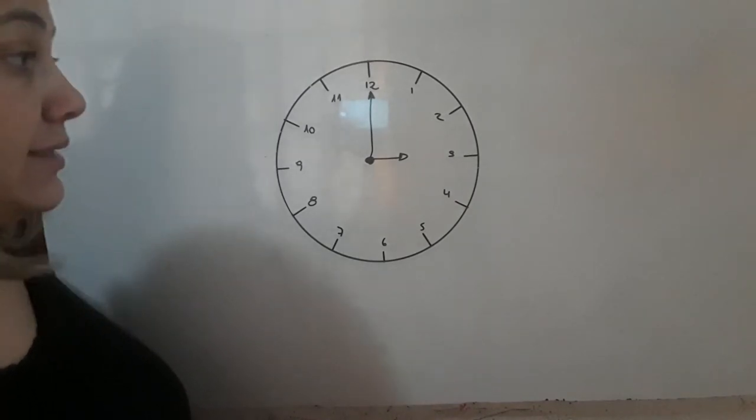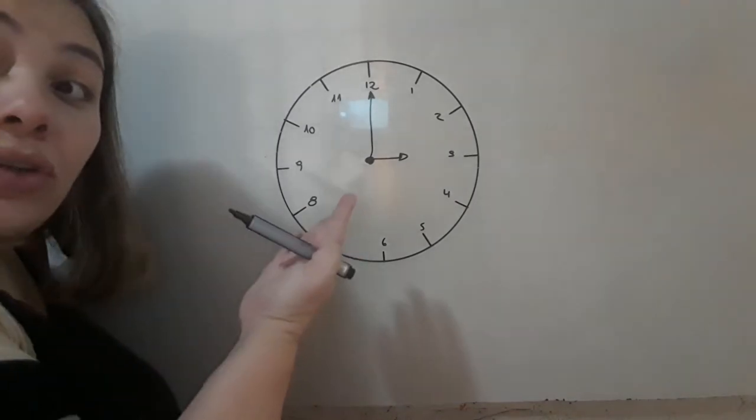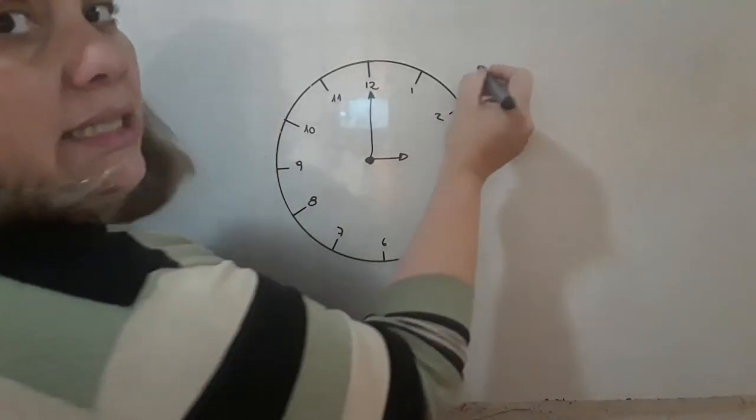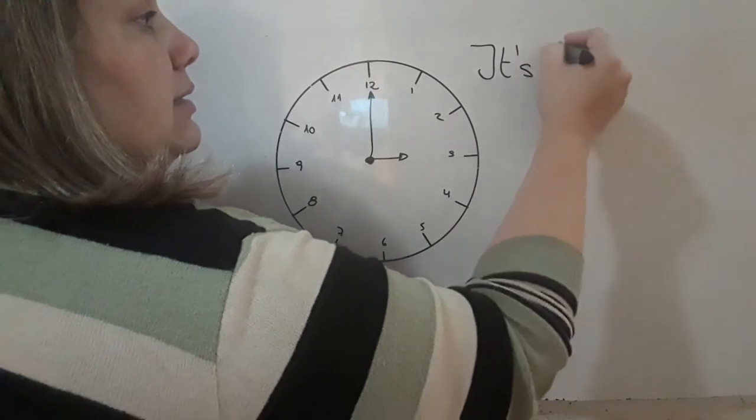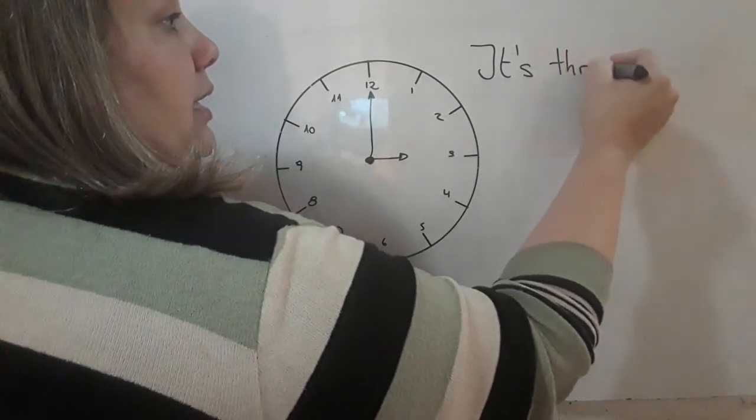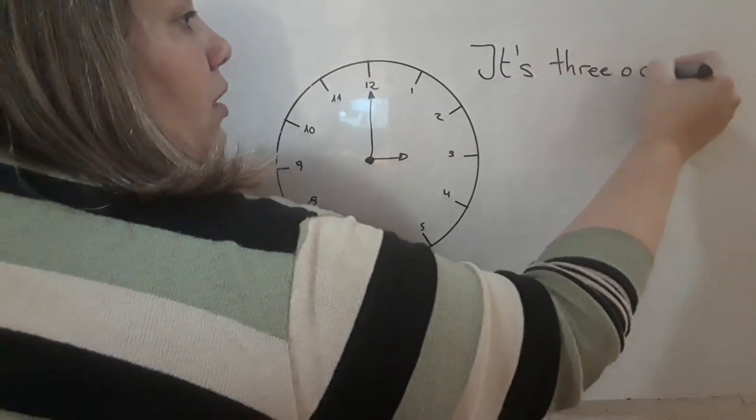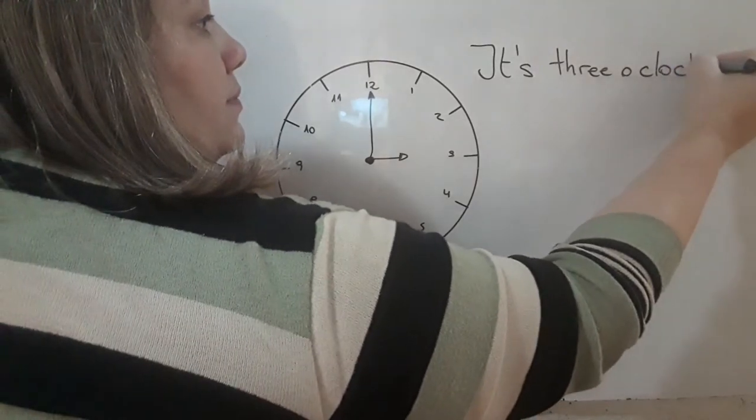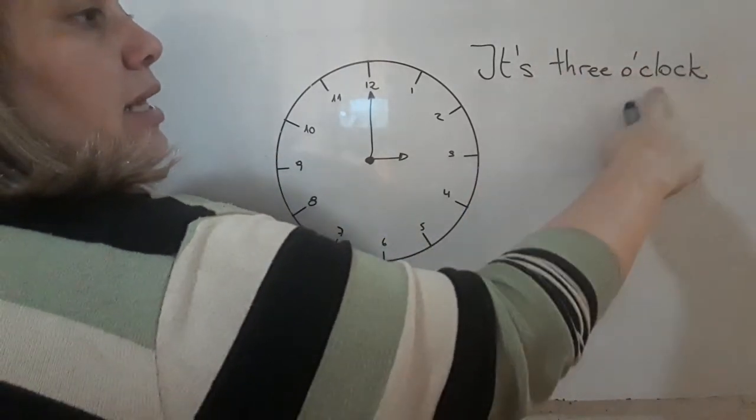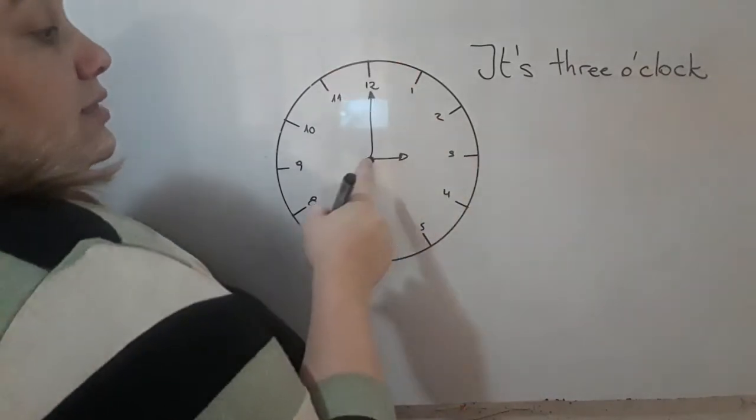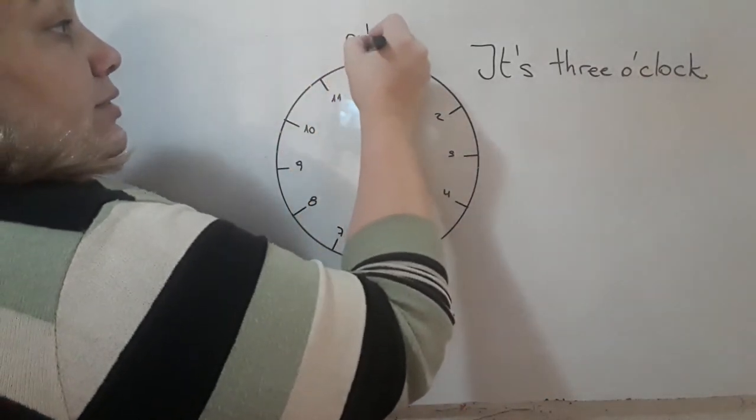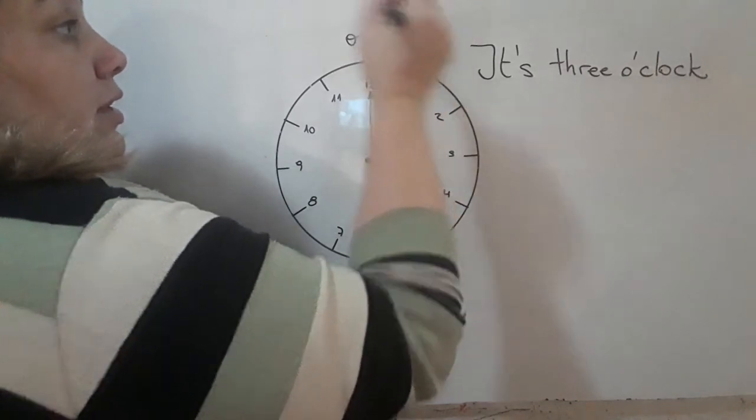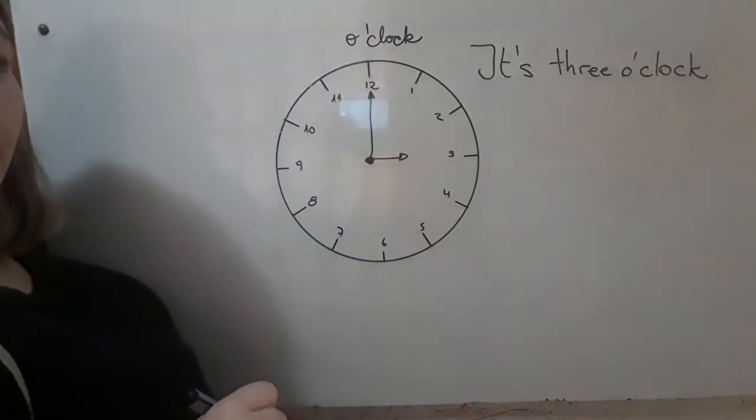Vamos con la misma hora que antes. Ahora son las trece en punto. So, in English it is, we say, it is three o'clock. Son las tres en punto. It is three o'clock, entonces, siempre que la del minuto esté aquí va a decir en punto, o'clock.